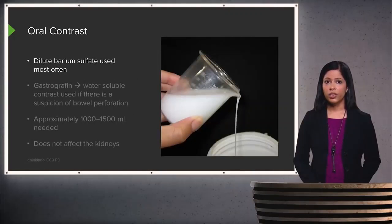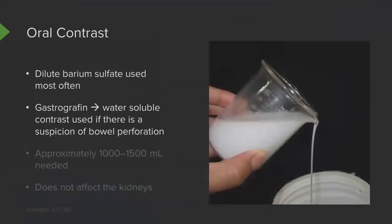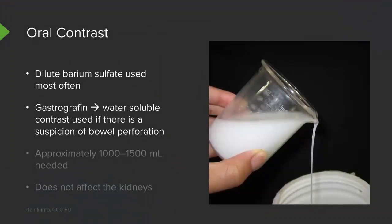Oral contrast is typically dilute barium sulfate. However, gastrographin, which is a water-soluble contrast, can also be used when there is suspicion of a bowel perforation. This is because if gastrographin penetrates into the peritoneum it can be absorbed, whereas dilute barium sulfate cannot.